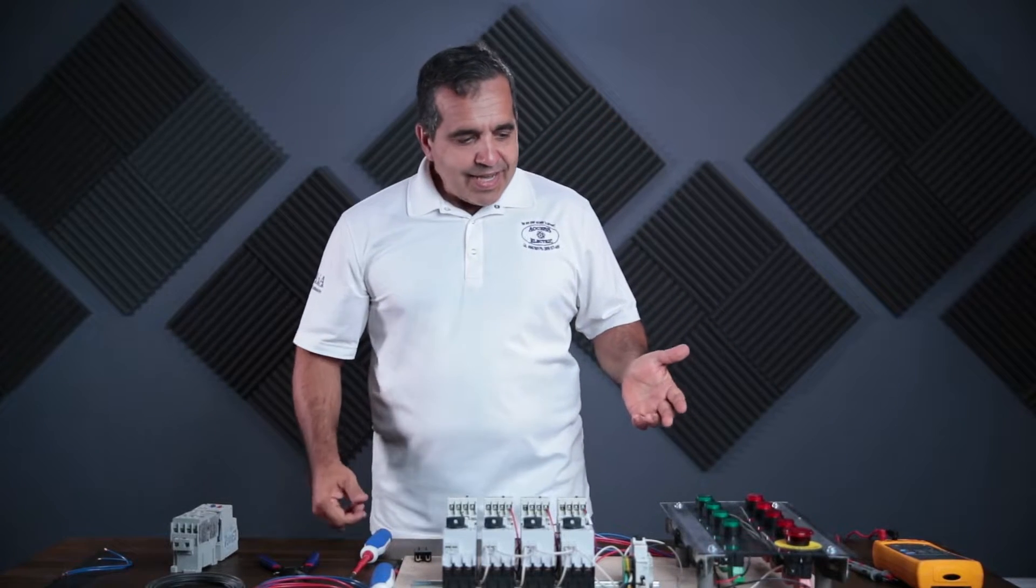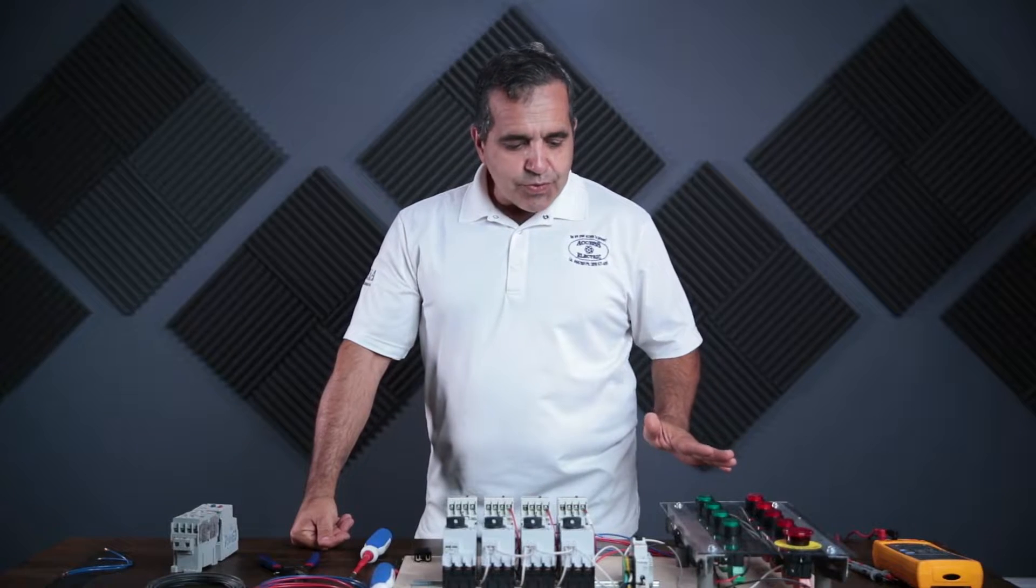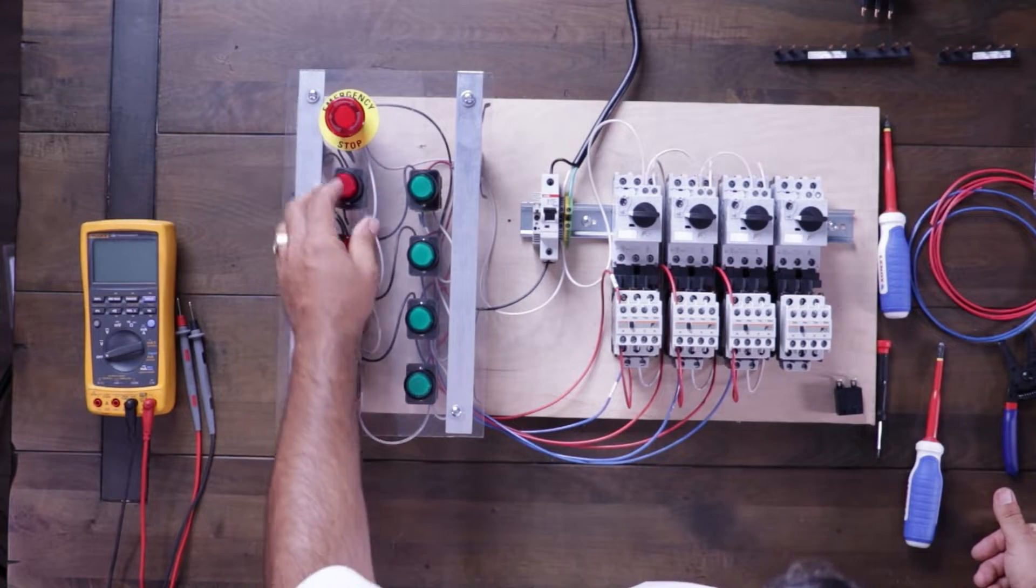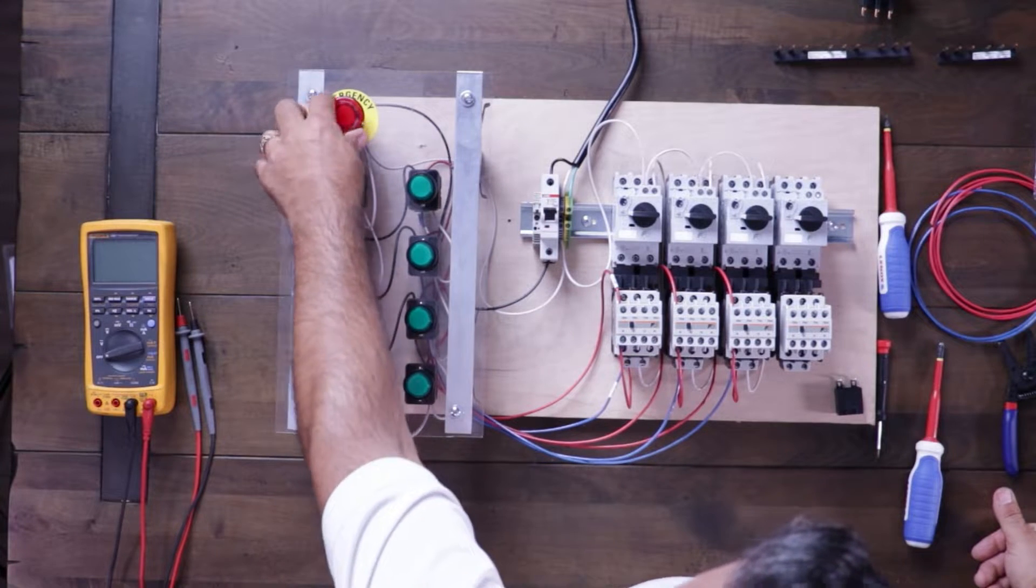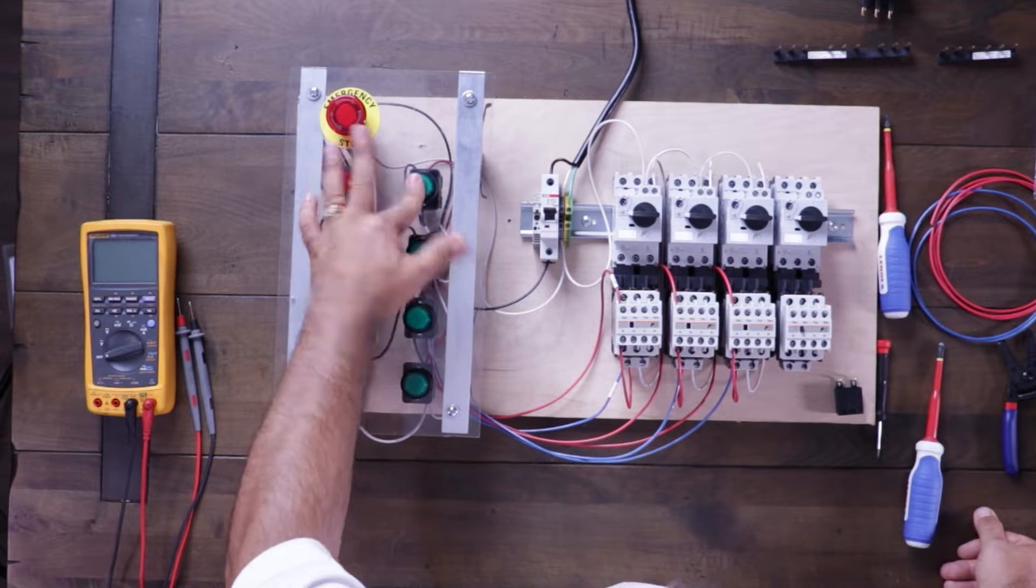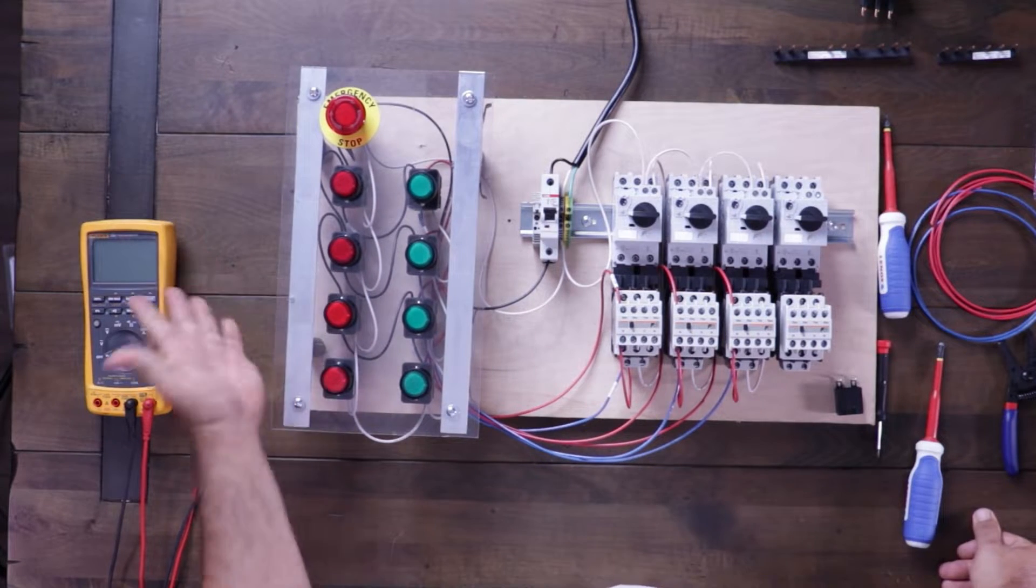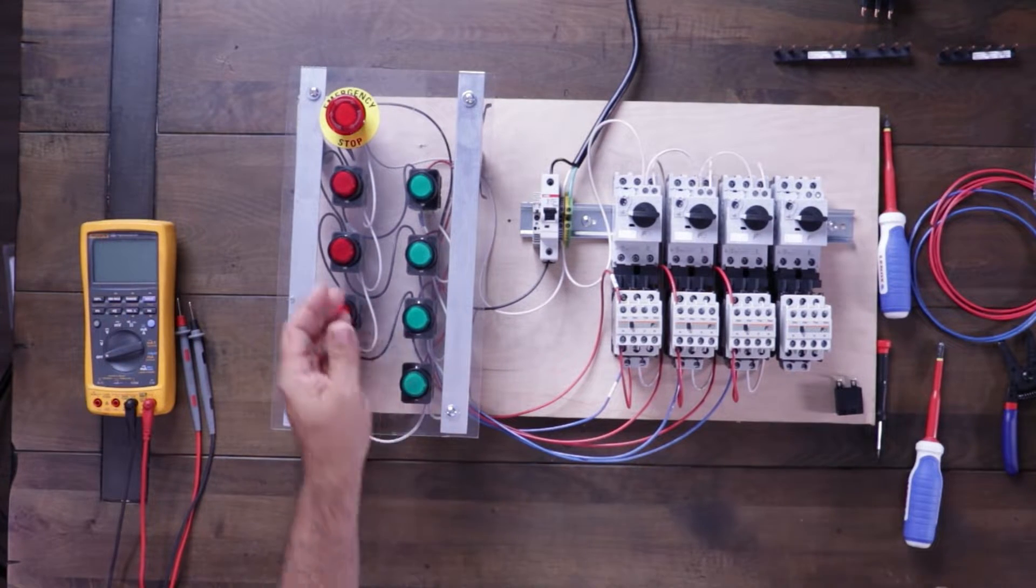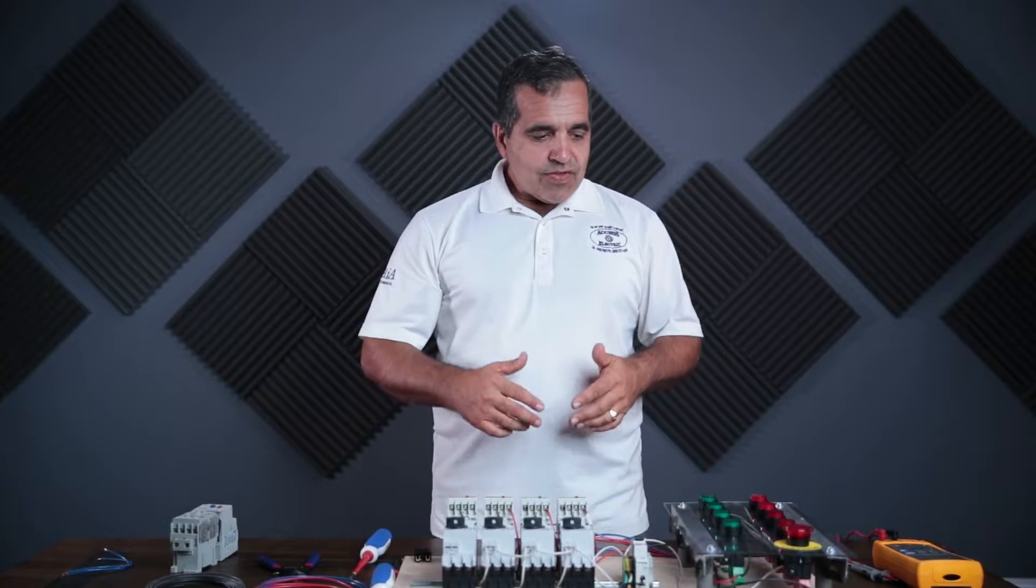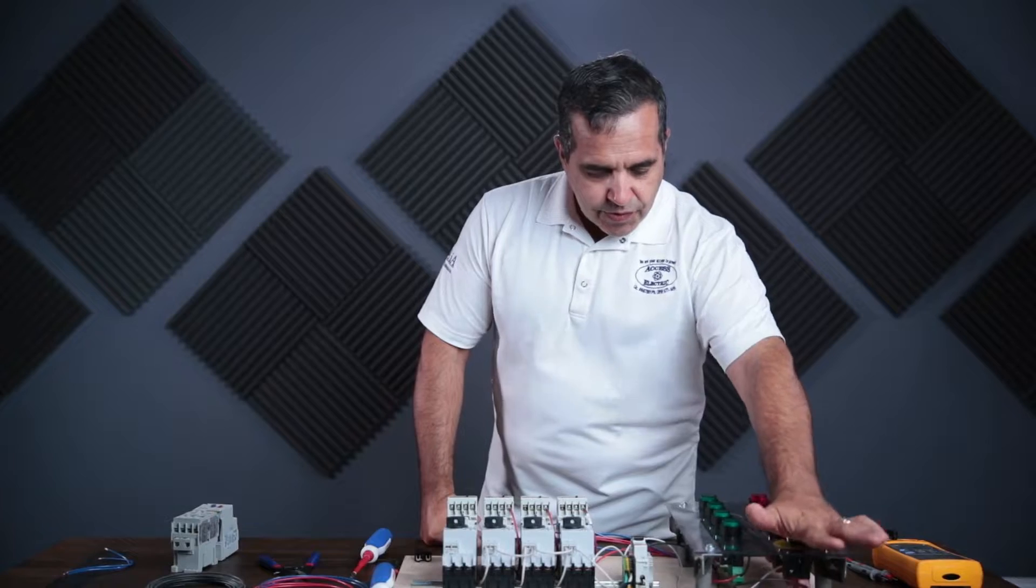Alright, here on my board, again, I've put everything back into a traditional three-wire start-stop, and so I turn on my power, I release my e-stop, and I can turn on any starter in any order, turn off any starter in any order. And so it's right back to where we were when we began, and so now I'm going to show you this third method.